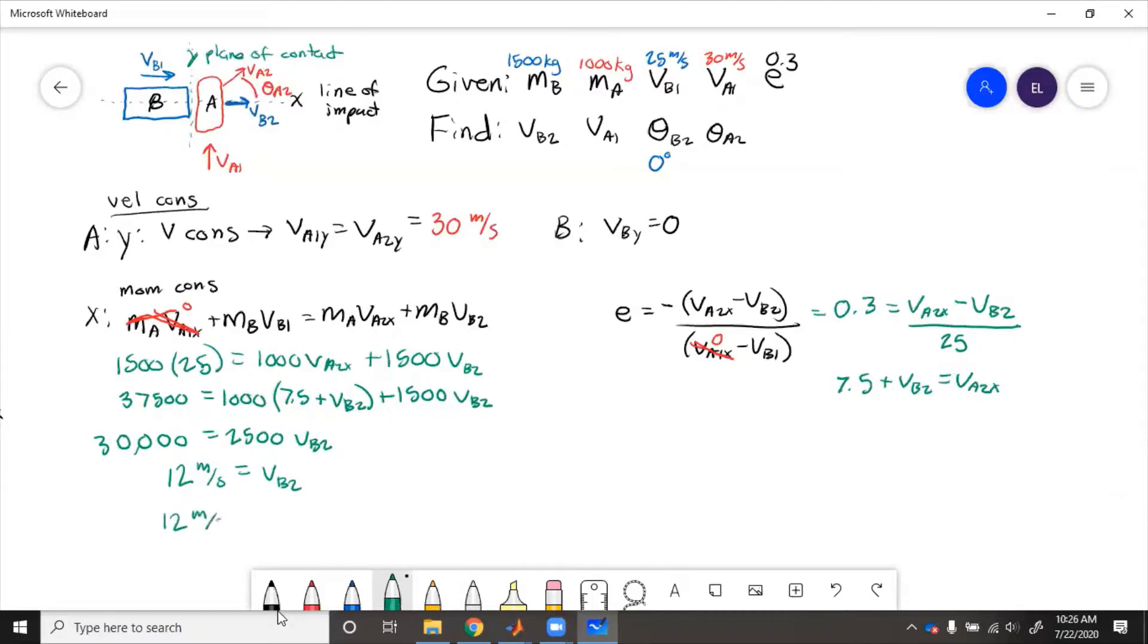12 meters per second to the right equals VB2. Now over here, we have to plug that back in. So 7.5 plus 12 is 19.5 meters per second equals VA2X.